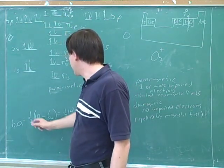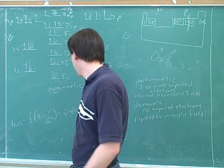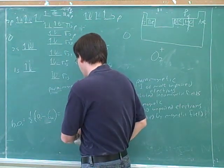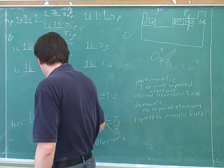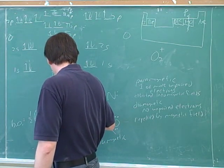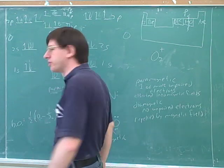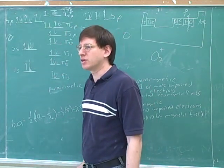So this would still be paramagnetic. How about the bond order? Which of these numbers is going to change? Yeah, so it would go to five. So now we have a bond order of 2.5. Okay, good.